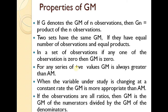Now we check the properties of geometric mean. The arithmetic mean has certain properties; similarly, for geometric mean, if G denotes the GM of n observations, the GM is the product of the n observations. Two sets have the same GM if they have an equal number of observations and equal products. Also, in a set of observations, if any one observation is zero, then the GM is zero.